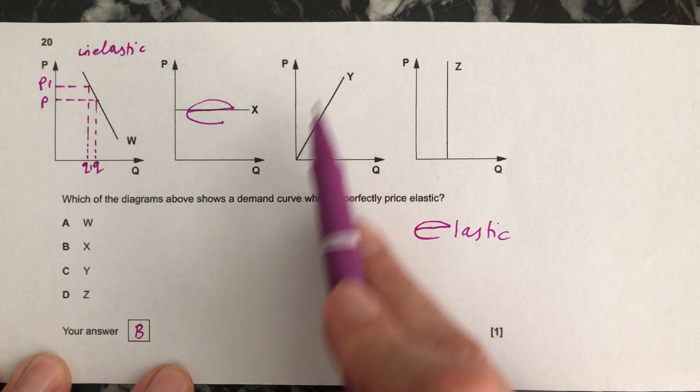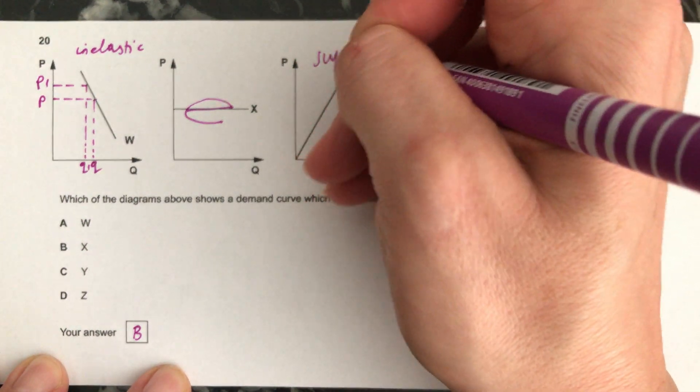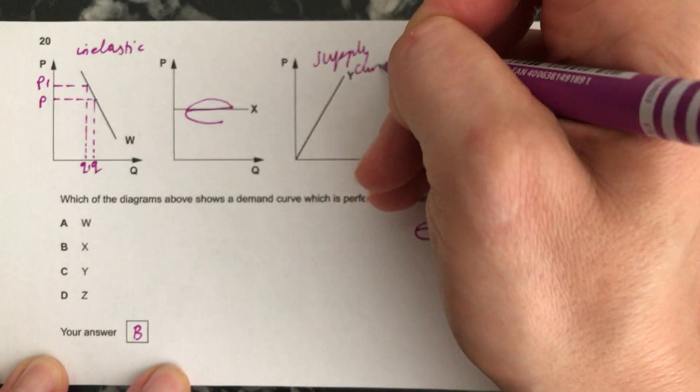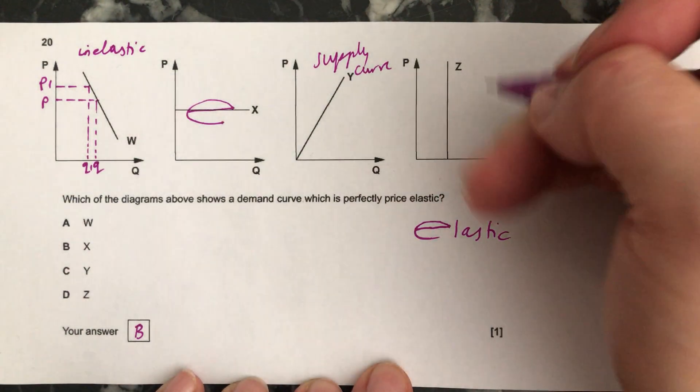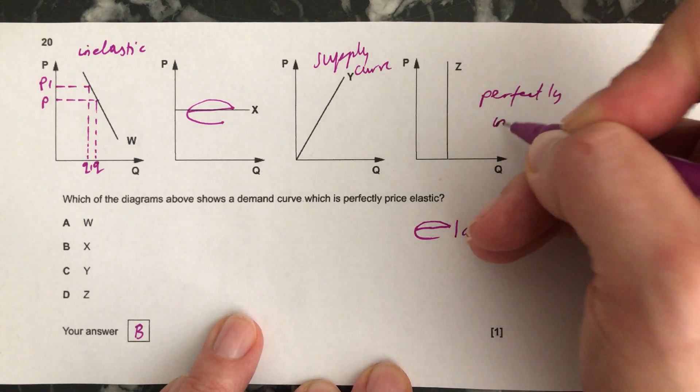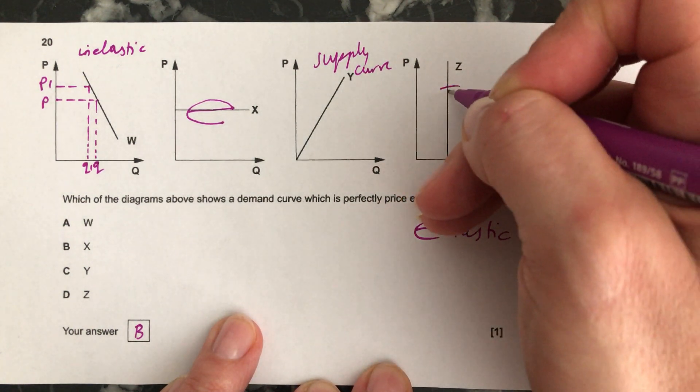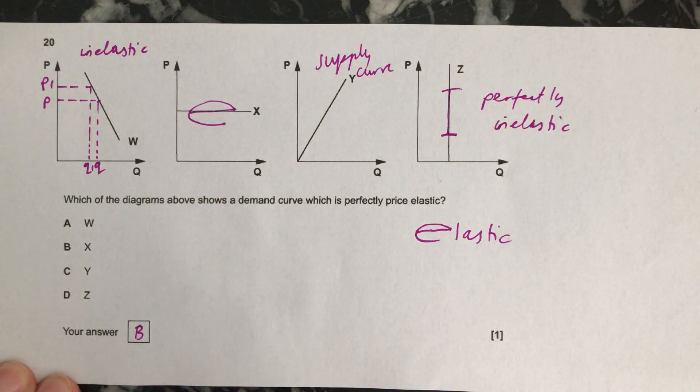This one is going upwards, saying when price goes up quantity goes up. This is actually a supply curve so that's a complete red herring. And the last one here, if this was a demand curve, this one would be perfectly inelastic because this is an I so that's the way to remember that. So the answer is B.